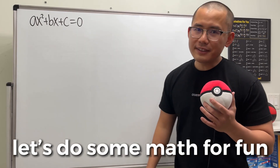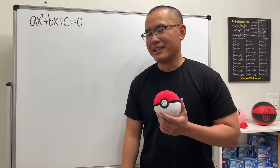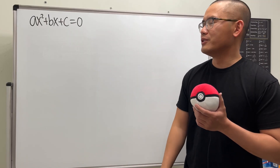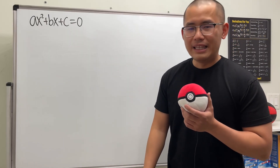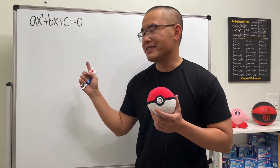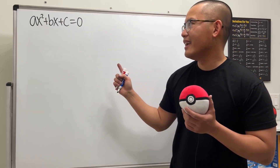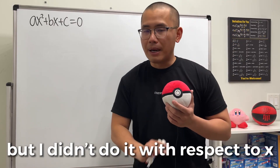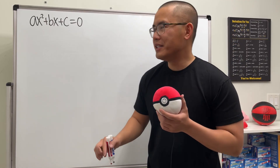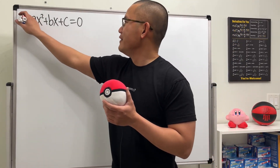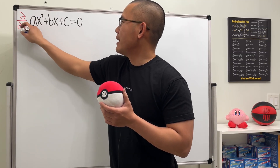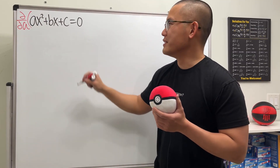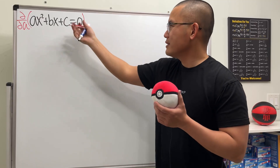Okay, let's do some math for fun. This right here is a standard form of a quadratic equation. What I did the other day was I differentiated it — but not with respect to x. I differentiated it with respect to a, so that's why we'll use the partial derivative symbol — some calculus stuff.